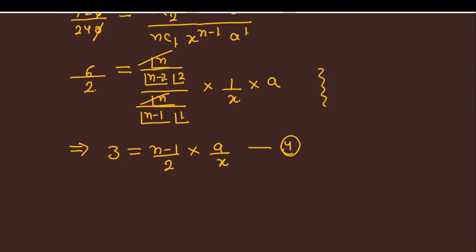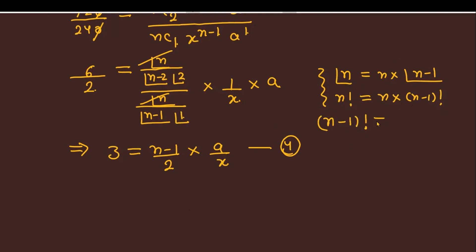A quick clarification on the factorial property used here: n! = n * (n-1)!. So (n-1)! = (n-1) * (n-2)!, which means (n-2)! cancels and we are left with (n-1) directly. This basic calculation is expected at this level.